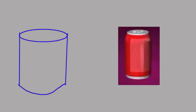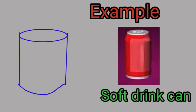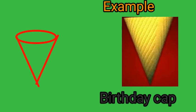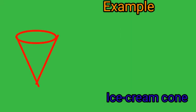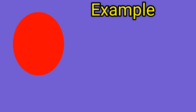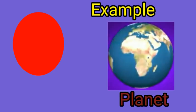Next solid shape: cylinder. Examples of cylinder: glass, soft drink can, candle. Next solid shape: cone. Examples of cone: birthday cap, ice cream cone, traffic cone. Next solid shape: sphere. Examples of sphere: ball, marble, planet.